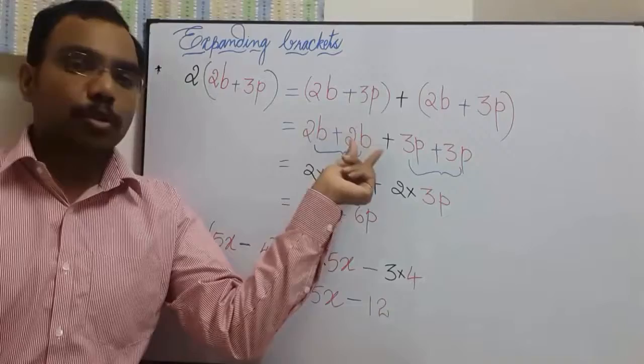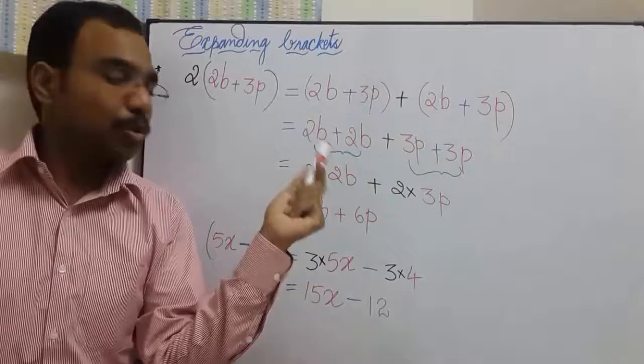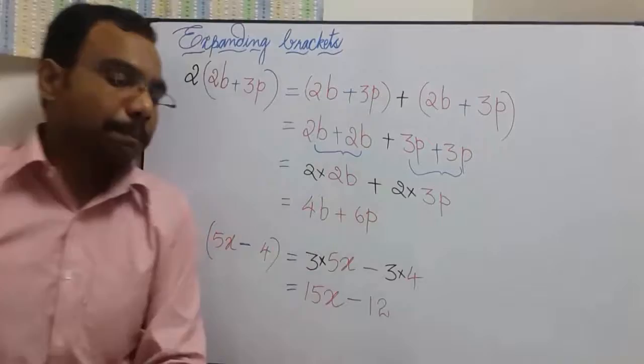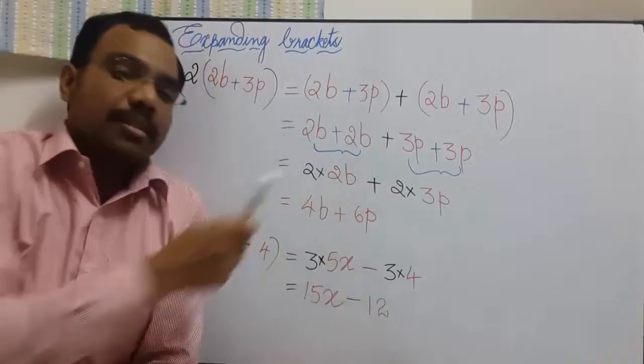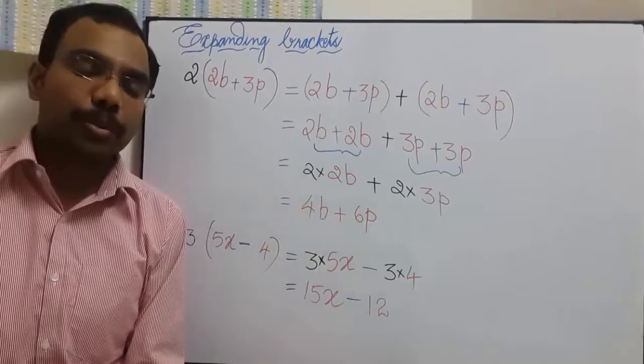Gathering like terms or collecting like terms, we have 2B and 2B together and 3P, 3P together. And you can see 2B two times. So 2 times of 2B and 2 times of 3P. So 2 times of 2B is 4B and 2 times of 3P is 6P. So we have 4B plus 6P as final expression.